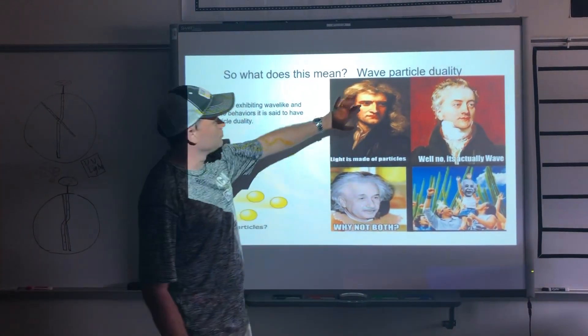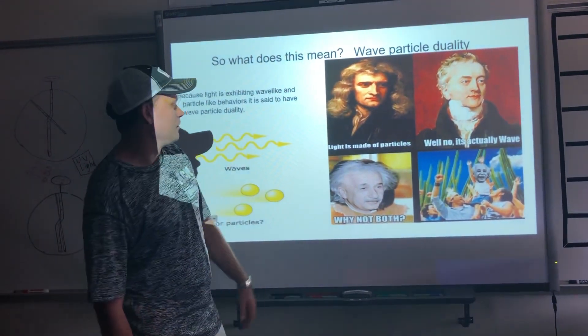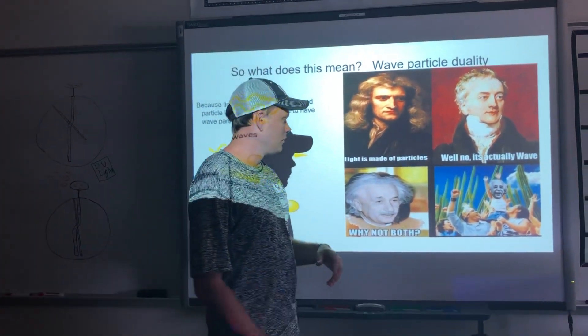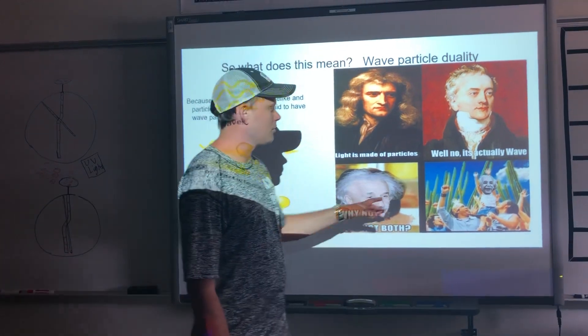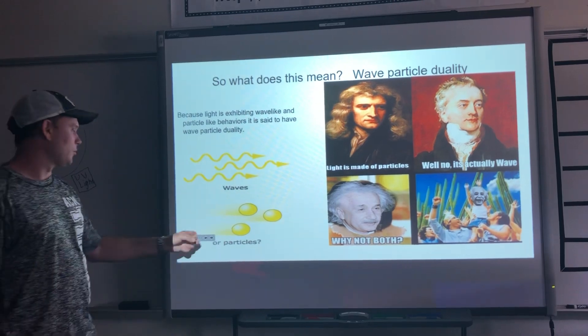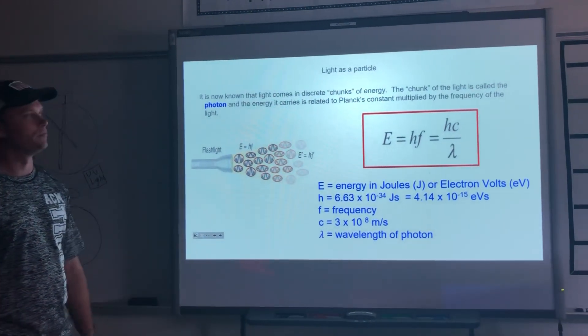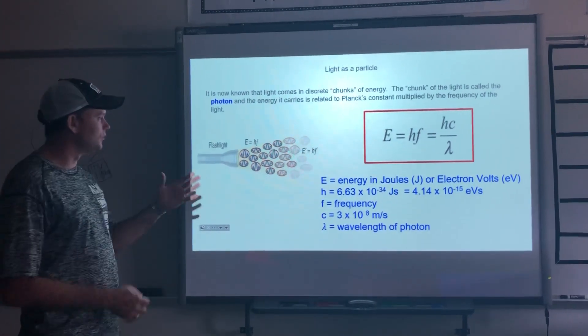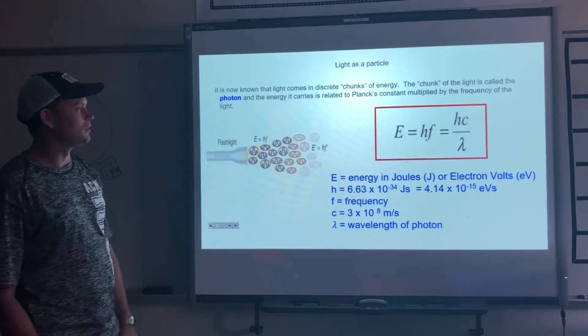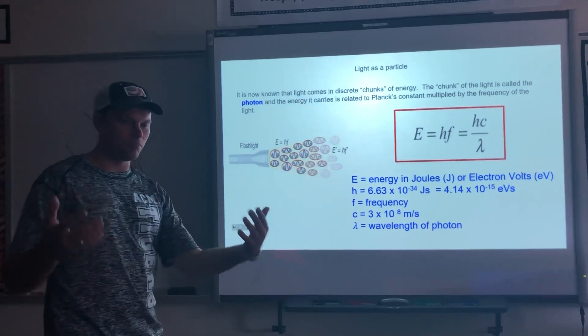So you had Isaac Newton talking about light being particles, and then you had Thomas Young saying it's a wave, and then Einstein is credited with this. He did correctly explain the photoelectric effect; that's what he won his Nobel Prize for. And now they're both right, everybody's happy. So is light a wave or a particle? Well, it's more complicated than that. It is both. It is known as a photon, and its energy is based on its frequency, not its amplitude.